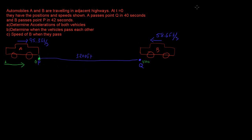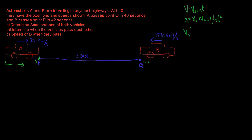Looking at our kinematic equations: velocity equals initial velocity plus acceleration times time; distance equals initial distance plus initial velocity times time plus one-half times acceleration times time squared; and final velocity squared equals initial velocity squared plus 2 times acceleration times the change in position.